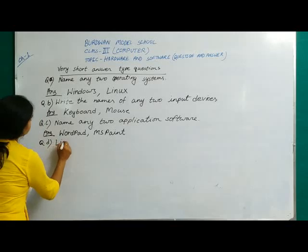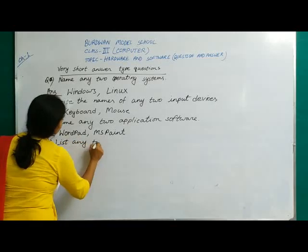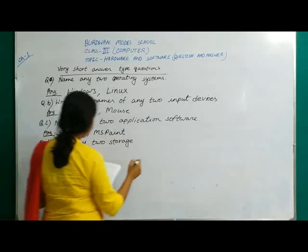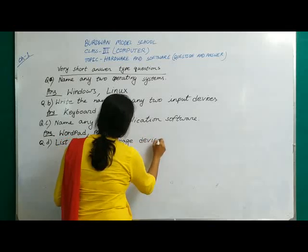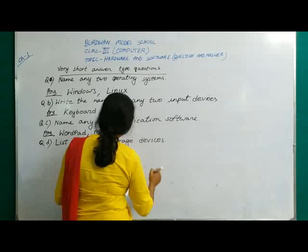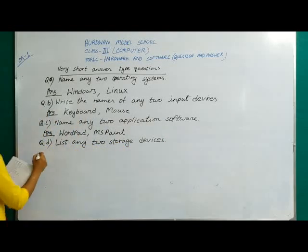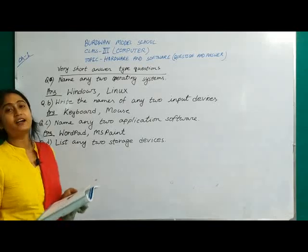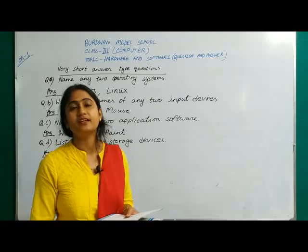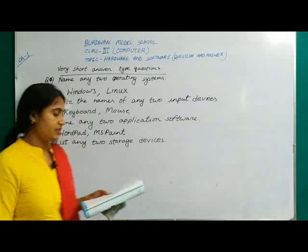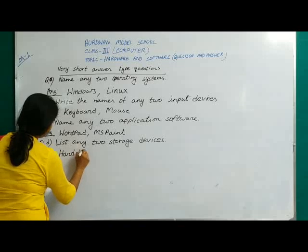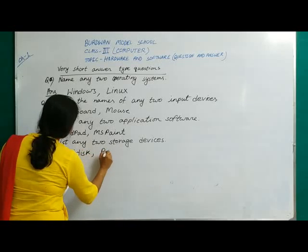List any 2 storage devices. Hard disk is the main storage device. Other than that: pen drive, CD, DVD — these are all examples of storage devices. Write any 2: hard disk and pen drive.